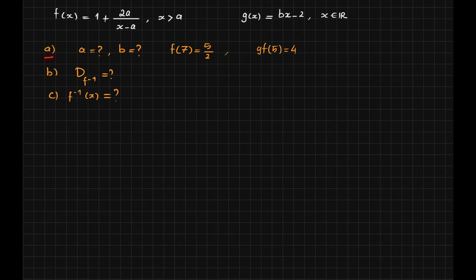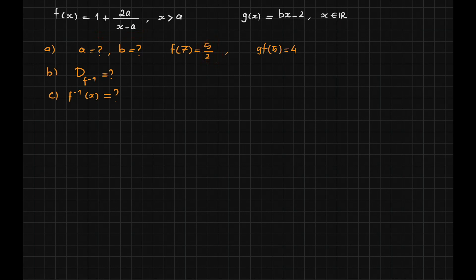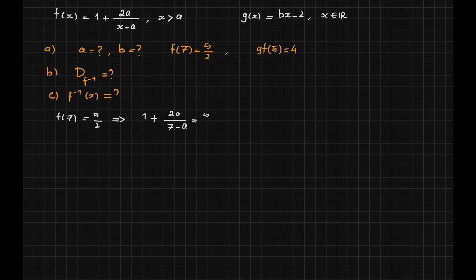Now let us solve the problem. In part a, I know that f of 7 is supposed to be 5 over 2. This piece of information is enough to find the exact value of the first constant a. It means that when you plug 7 for x, the output of the function is supposed to be 5 over 2. So from f(7) equals 5 over 2, I go to function f and replace x with 7. I get this expression, and the output is supposed to be 5 over 2. This is a simple equation in a.